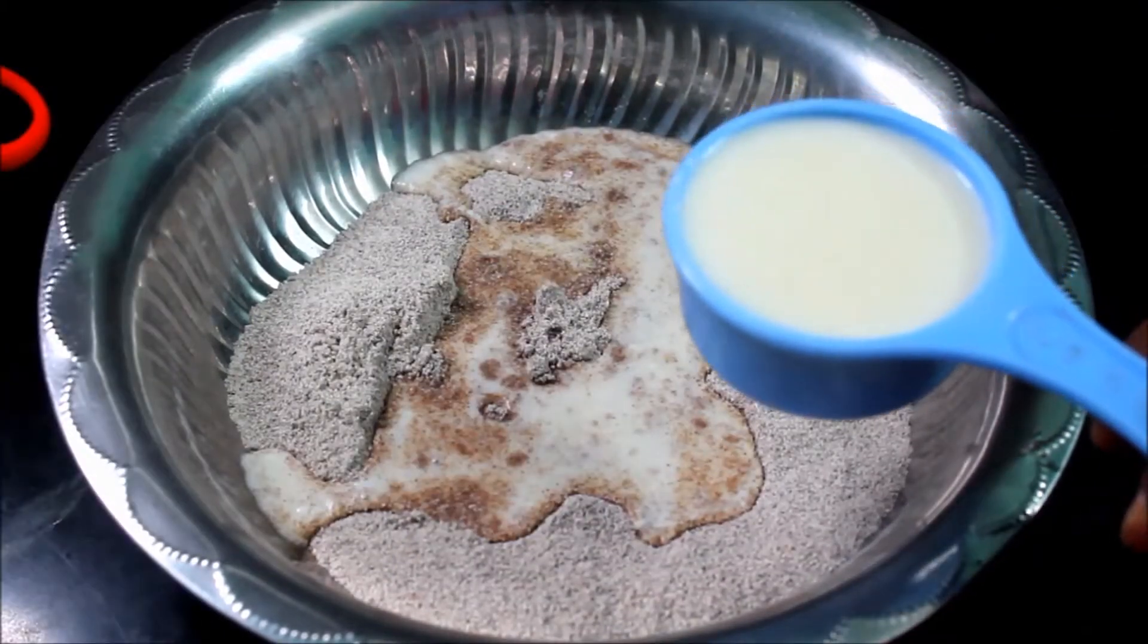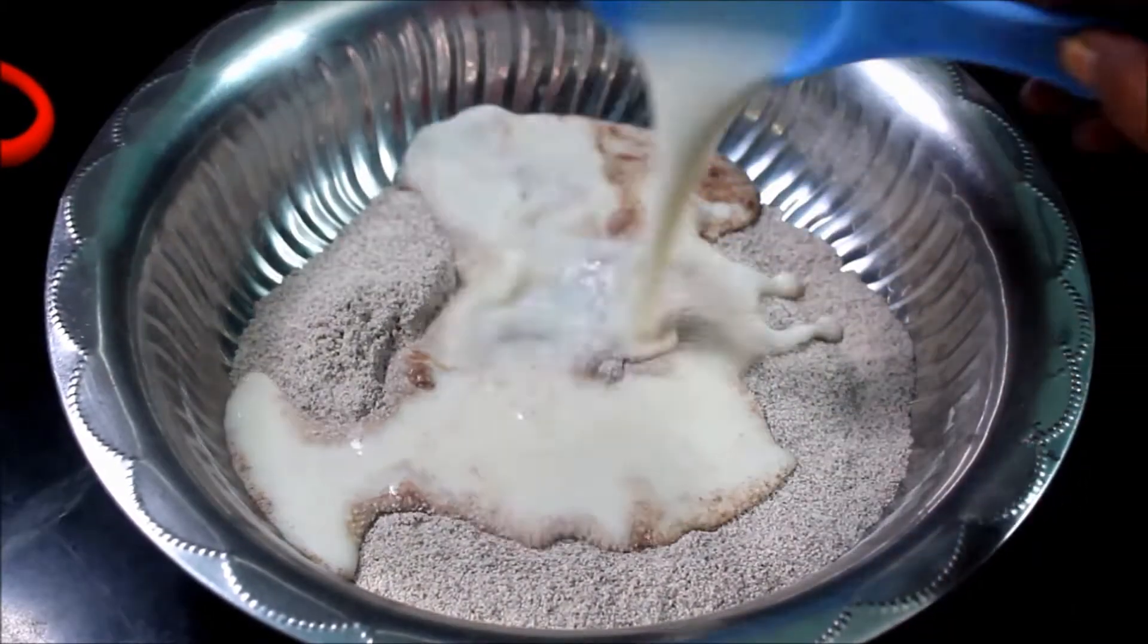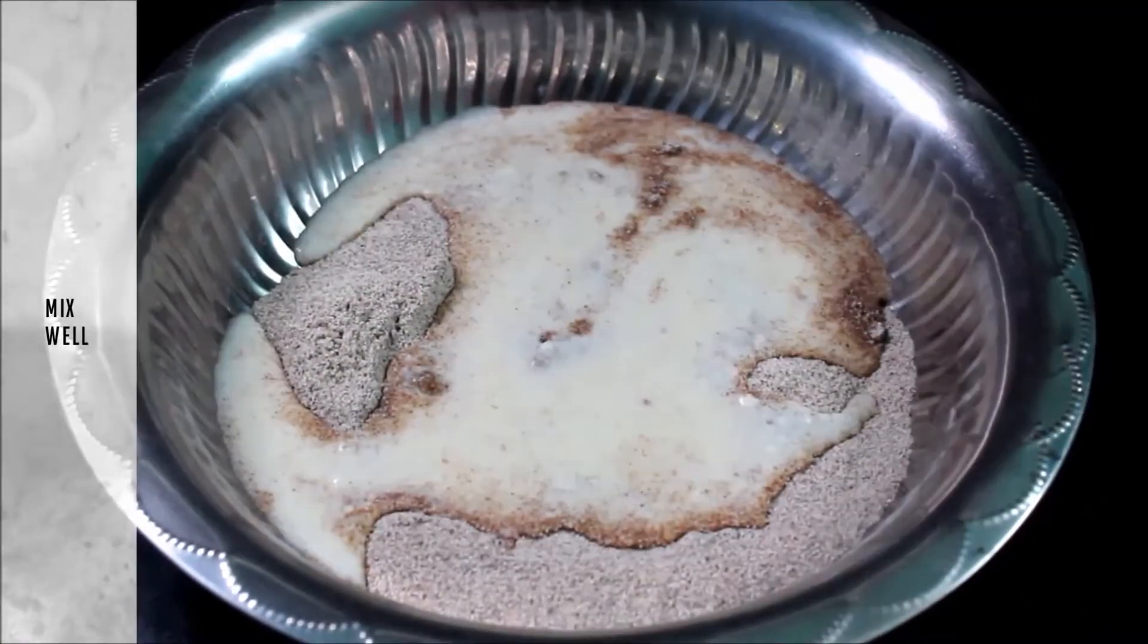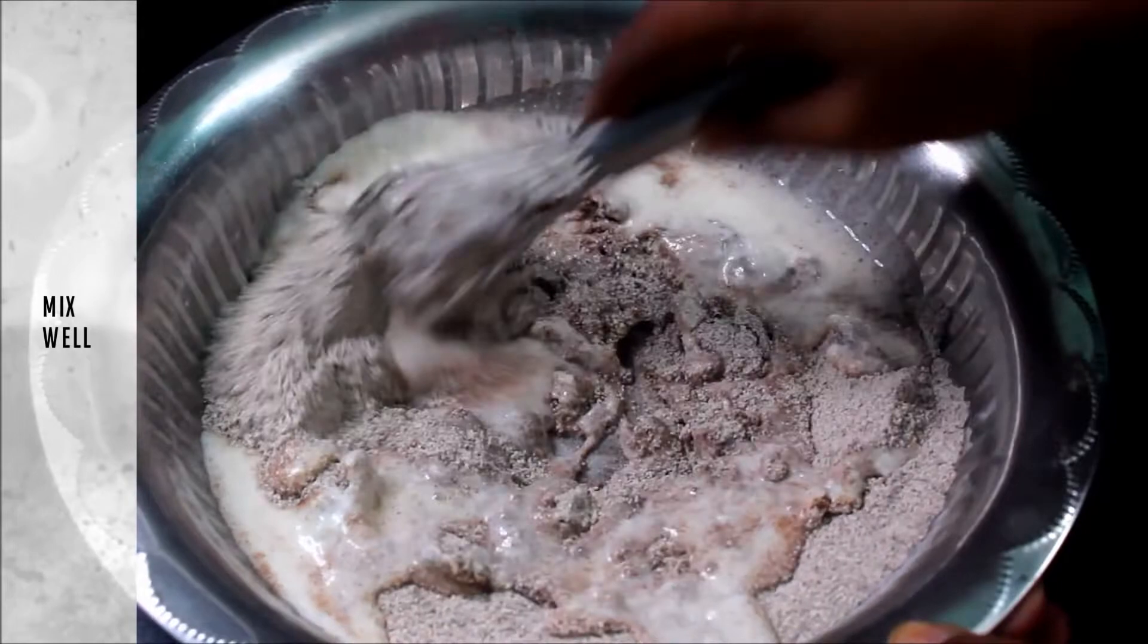Add 1 cup of rawa to the pan. The mixture is thick and medium consistency. We can see it is very thick.